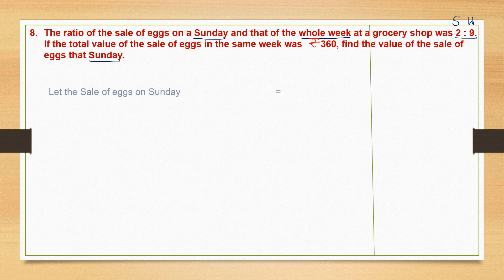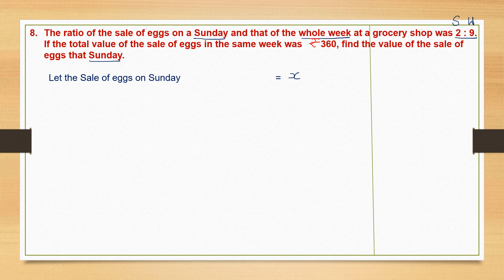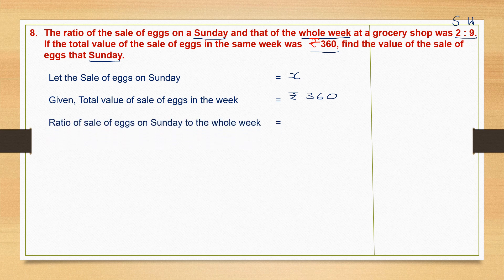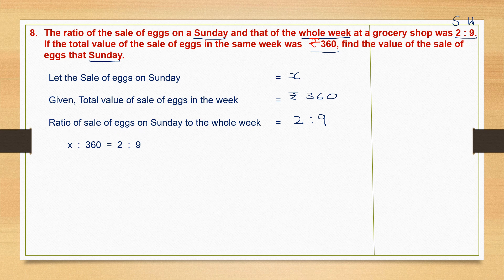So let the sale of x on Sunday be x. Sunday we don't know so we have marked it as x. Total value of sale of x in the week is given to us as 360 rupees. Ratio of sale of x on Sunday to the whole week is given as 2 is to 9 — the order is Sunday and week. So on the left-hand side also we must have the same order: Sunday is x and week is 360 rupees. Now I have my proportion, and the order is the same on both sides.